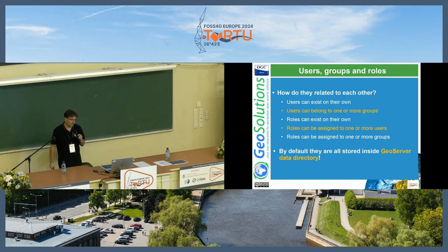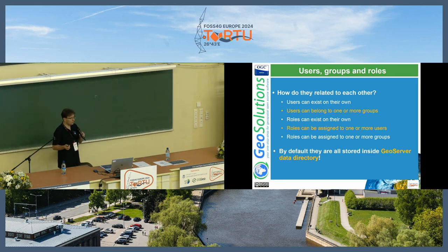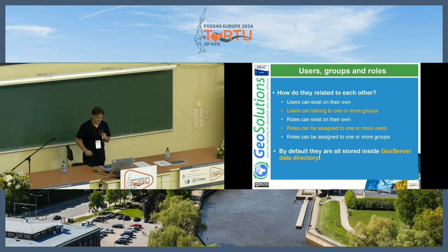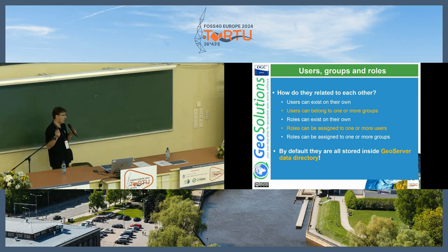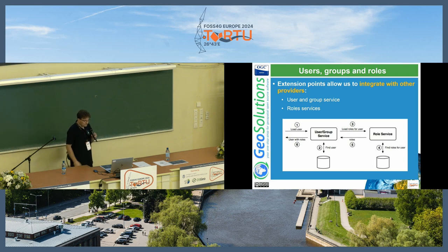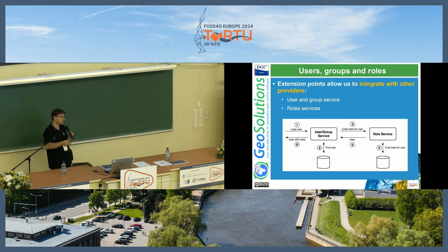User groups and roles — how do they relate to each other? Users can exist on their own, they can belong to a group. Roles can exist on their own, they can be grouped in a hierarchy as well, and they can be assigned to users or to groups, depending on how you want to organize your authorization mechanism. By default, they are all stored inside the GeoServer directory, but you can also have all of this interact with an LDAP server, a directory server of your choice, an external database, or OAuth. Extension points allow integration with other providers that can provide a notion of user, verify that the user exists, and attach roles to users.